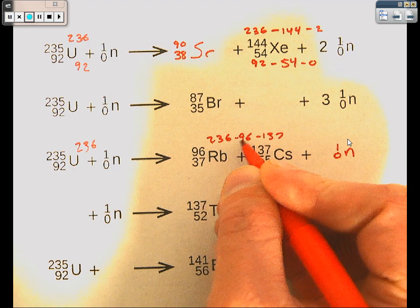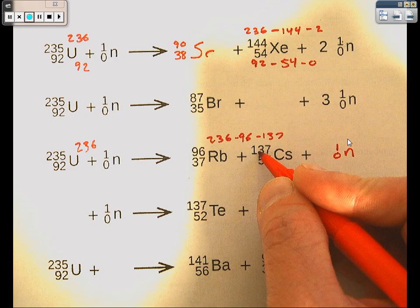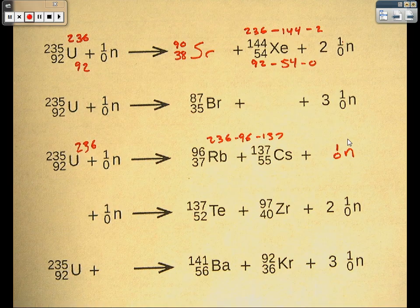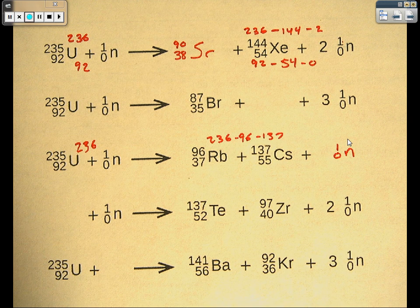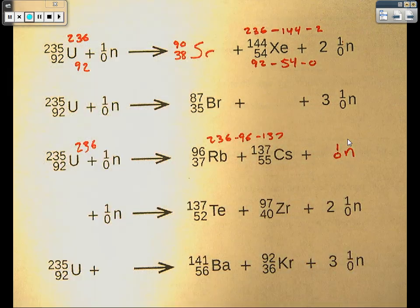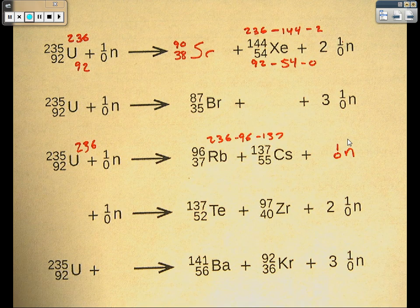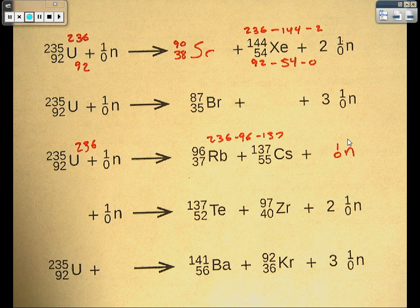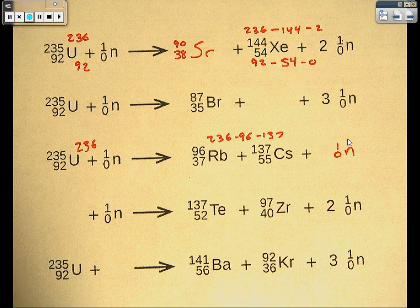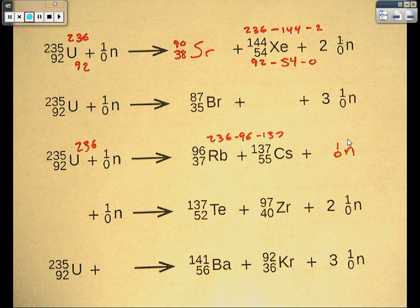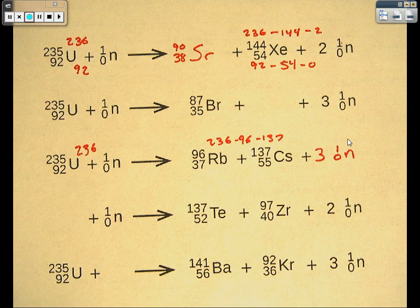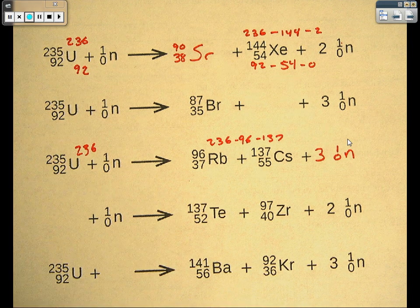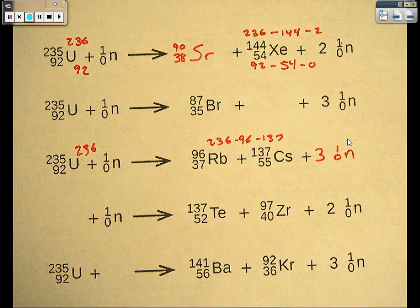So we'll take the 236 minus 96 minus 137. The 96 from the first element, the 137 from the second one. We subtract that out. We get 236 minus 96 minus 137. I knew I punched that in wrong. Let's get 3. 3 is the number of neutrons that have to be produced in this fission reaction.